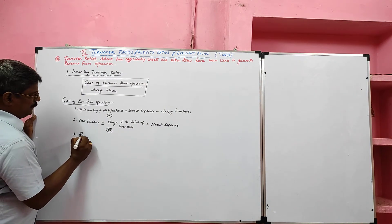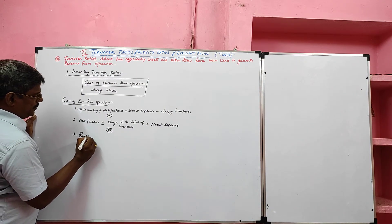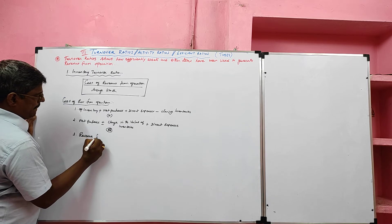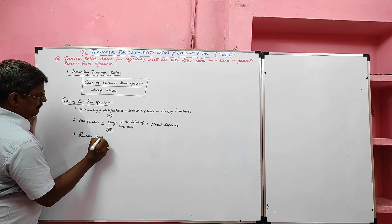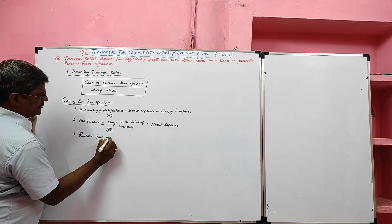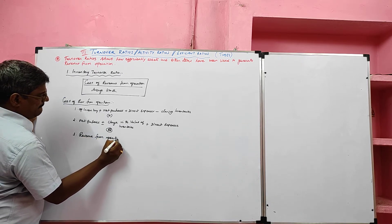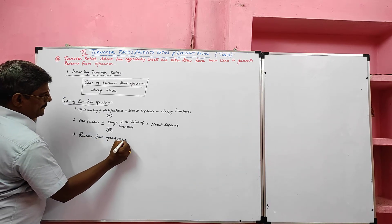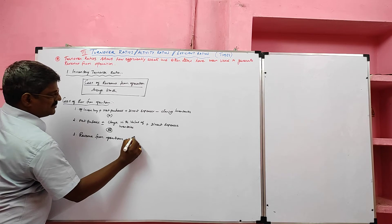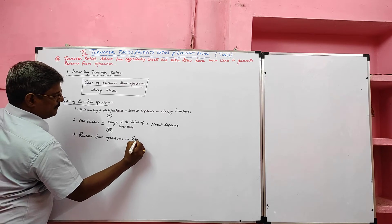One more formula: revenue from operations minus gross profit gives us the cost of revenue from operations.